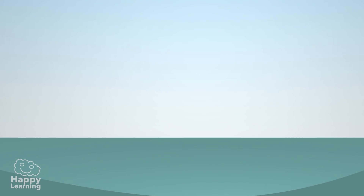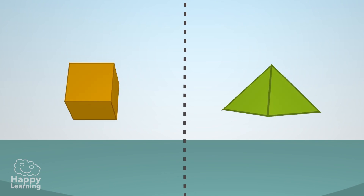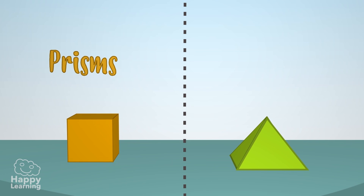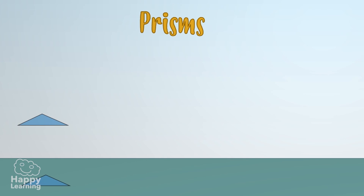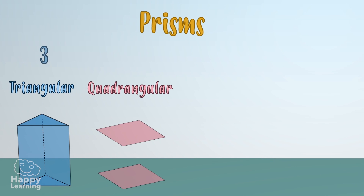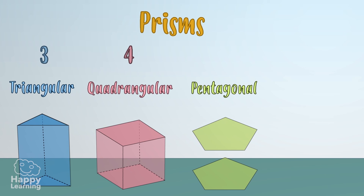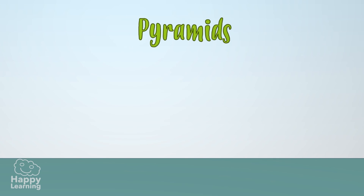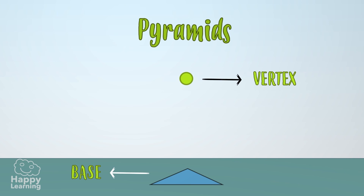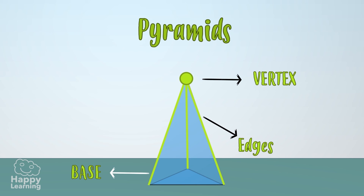Now observe this pyramid of Egypt and we will discover its faces, vertices, and edges. Polyhedrons can be classified in many ways, but there are two types we have to know: prisms and pyramids. Prisms have two polygonal bases. They are named by the number of sides of the base — a triangular prism has three sides, a quadrangular prism has four sides, pentagonal has five, hexagonal has six, and so on.